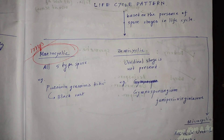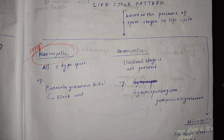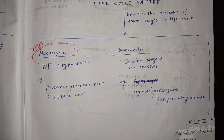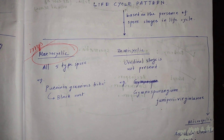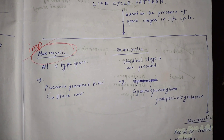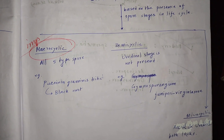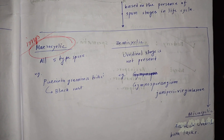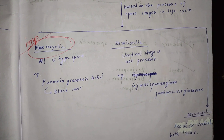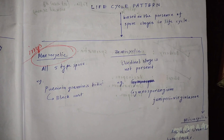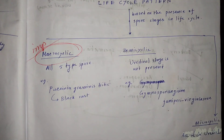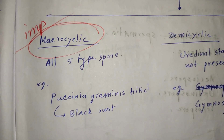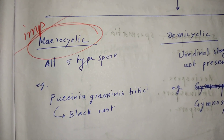We all know that rust fungus has the characteristic feature that they can show up to a maximum of 5 types of morphologically different spores. Those spores are the spermatia, aeciospores, urediniospores, teliospores, and basidiospores. Those rust fungi which show all 5 types of spores are called as having a macrocyclic life cycle.